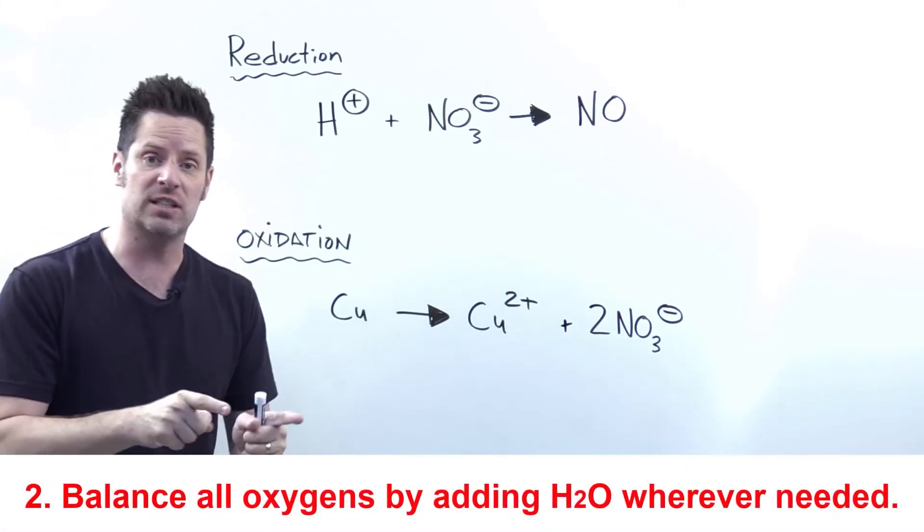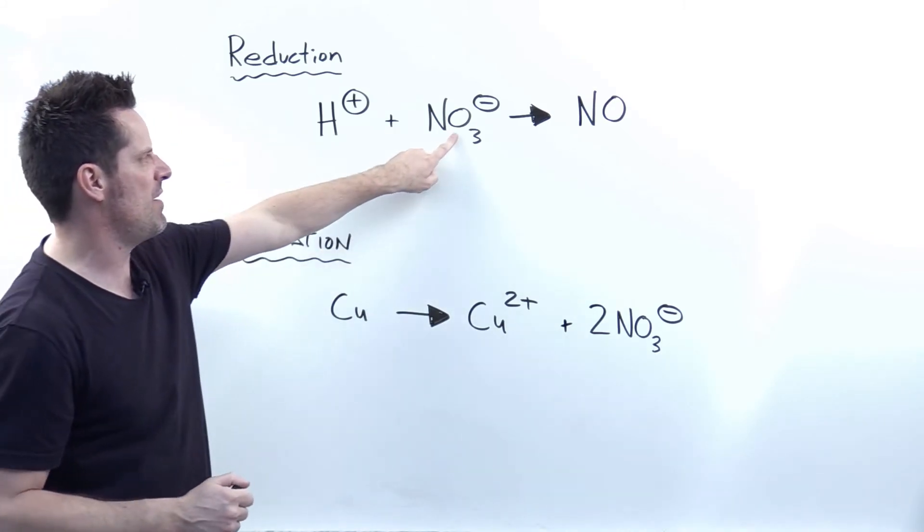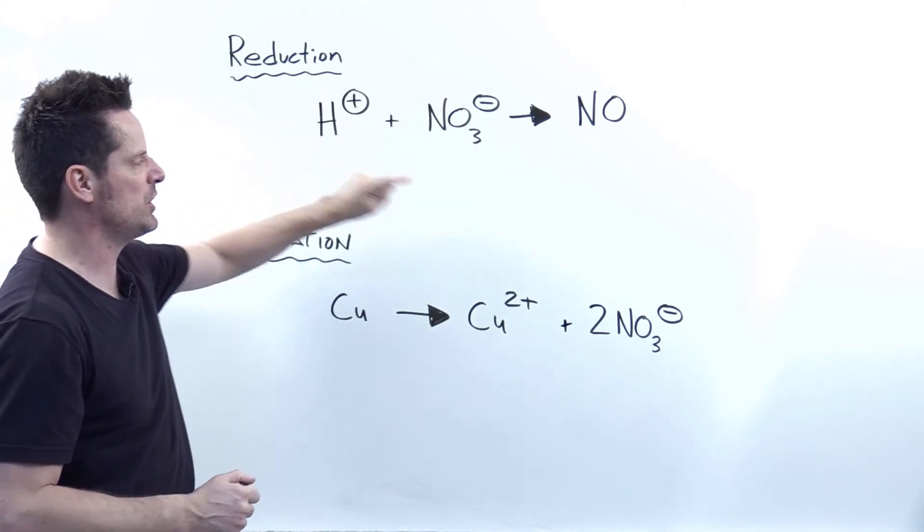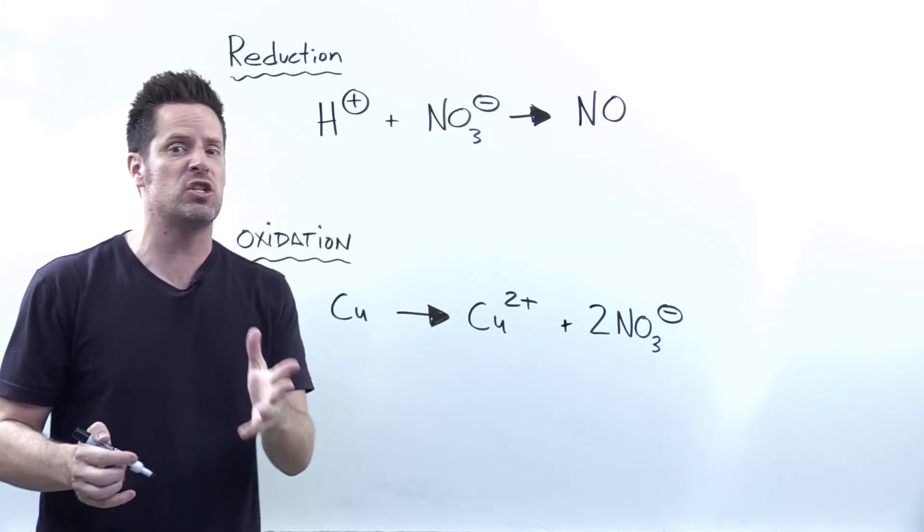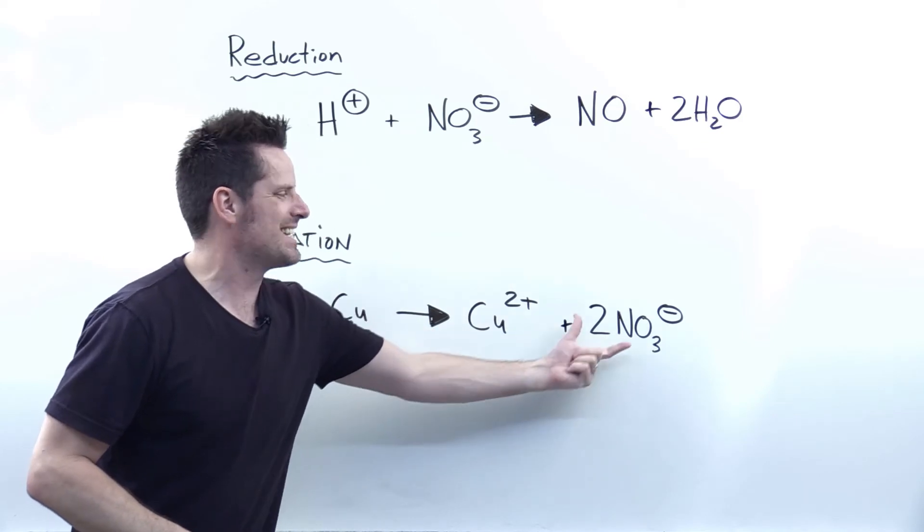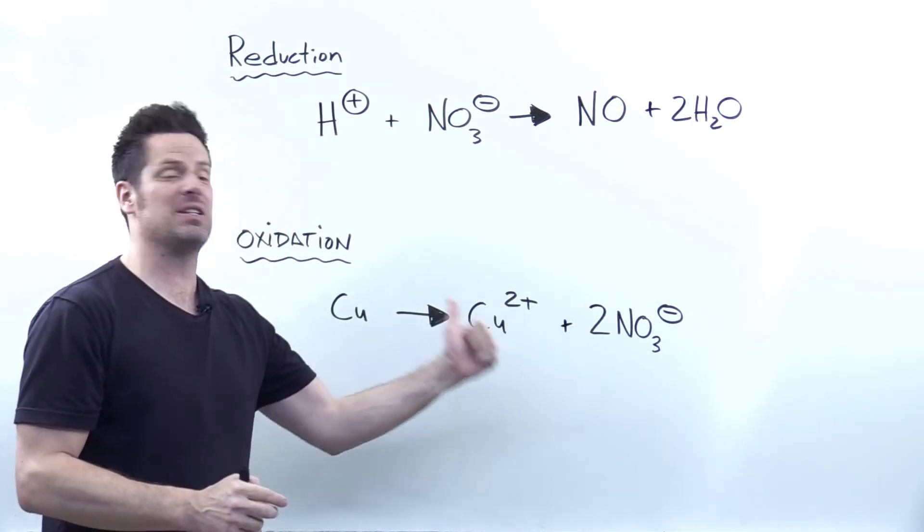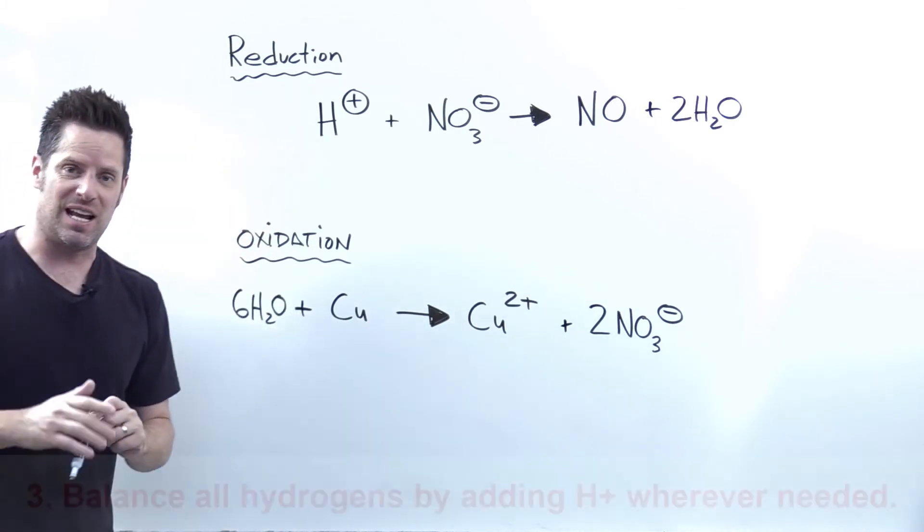The next step is I balance oxygens by adding H2Os wherever is necessary. For this top reaction, you can see I have three oxygens on the left side of the equation and only one on the right. So I'm going to have to add two H2Os to the right. For the bottom reaction, I have two multiplied through by three is six oxygen atoms on the right. To balance that, I'm going to have to put six H2Os on the left, which takes me to the next step.